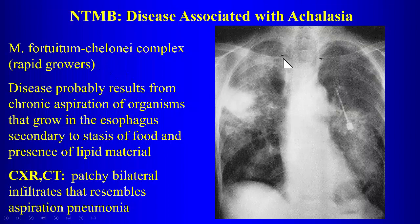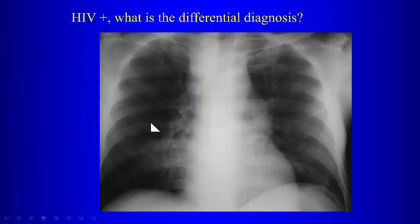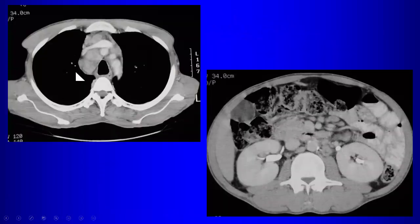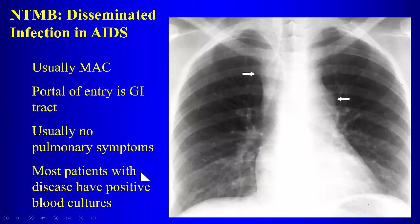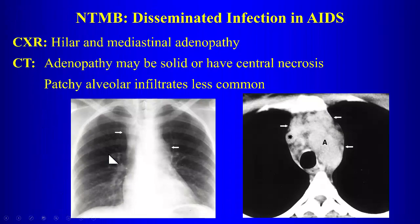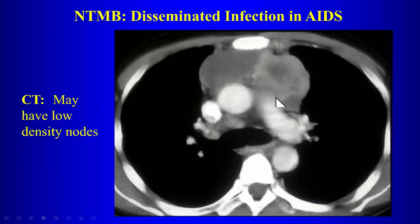Mycobacterium fortuitum-chelonae complex associated with achalasia causes lung disease through aspiration. HIV-positive patients can also have lymphadenopathy from atypical mycobacterial infection without lung disease — either in the chest or abdomen. Disseminated infection in AIDS can show lymphadenopathy, sometimes low-attenuation nodes similar to TB appearance.